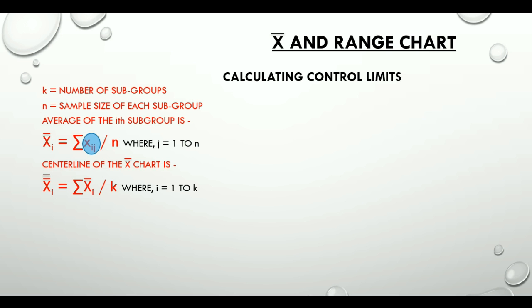Range of the ith subgroup is RI and center line of the R chart that is R bar is equal to the summation of RI divided by K where I can again take values from 1 to K. So this was all that we required to be able to calculate the control limits.